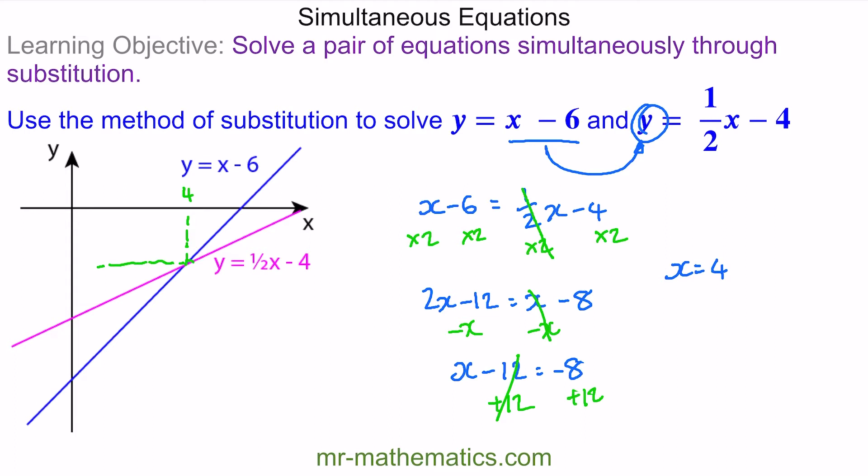Now we can work out the y value, which is this value here, by substituting x equals 4 back into either of these equations. I'm going to choose this equation because it's the simplest one. So y equals x, which is 4, minus 6. So y equals negative 2. So here we have the x and the y value.